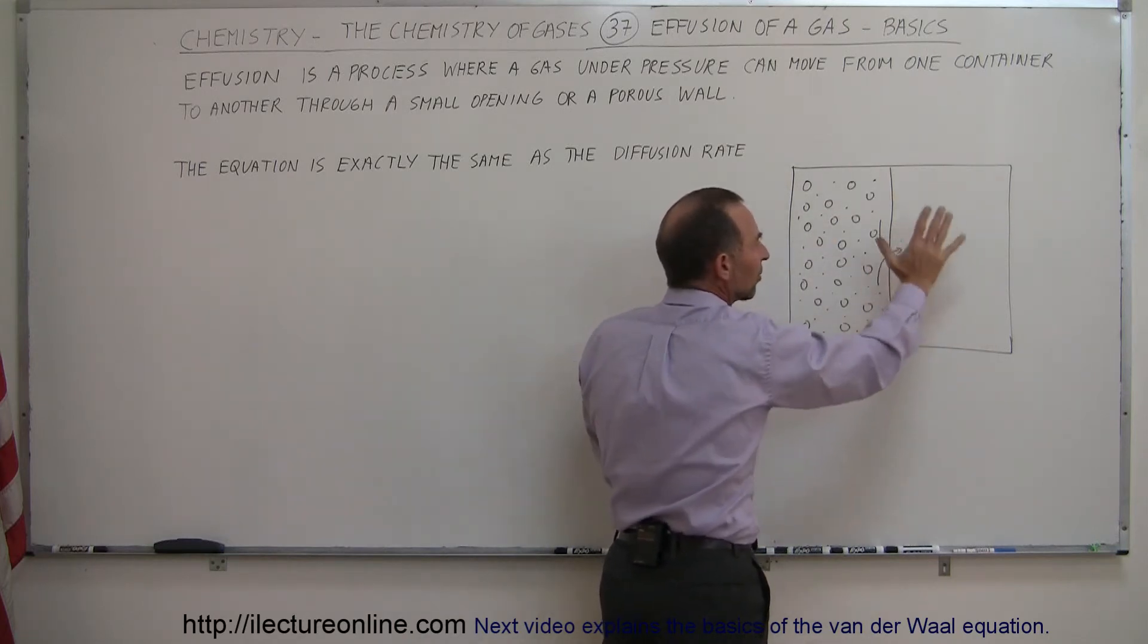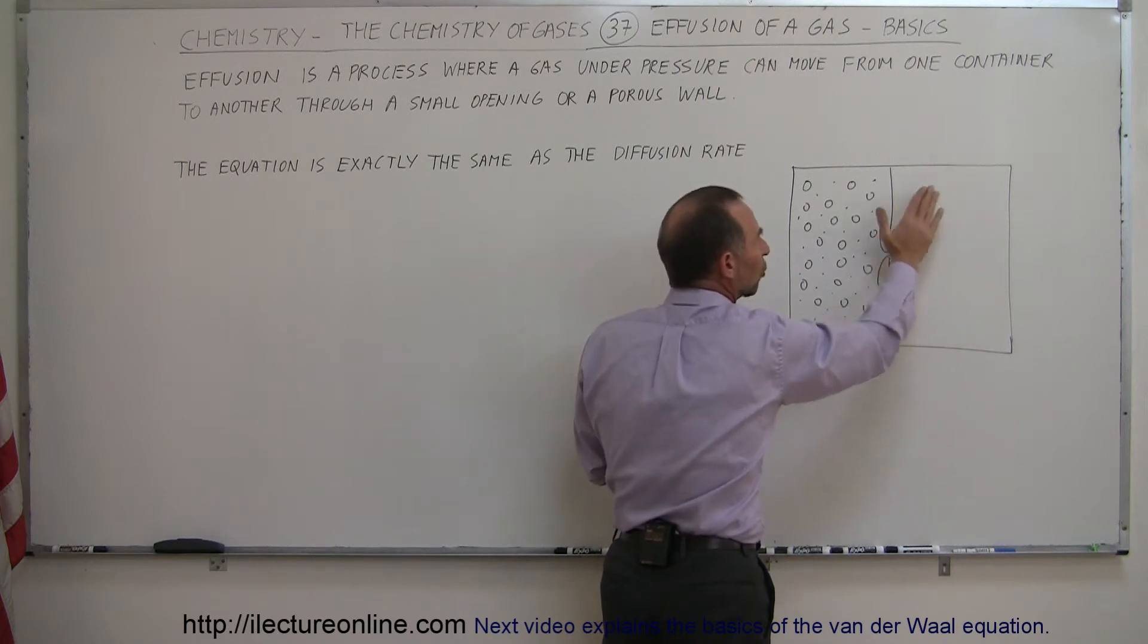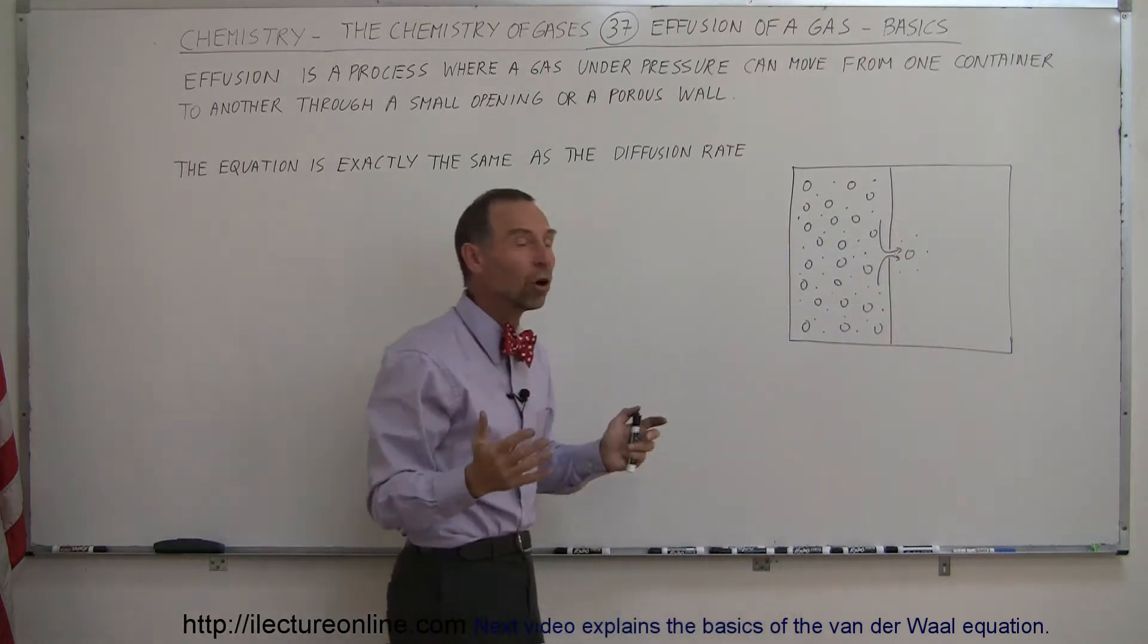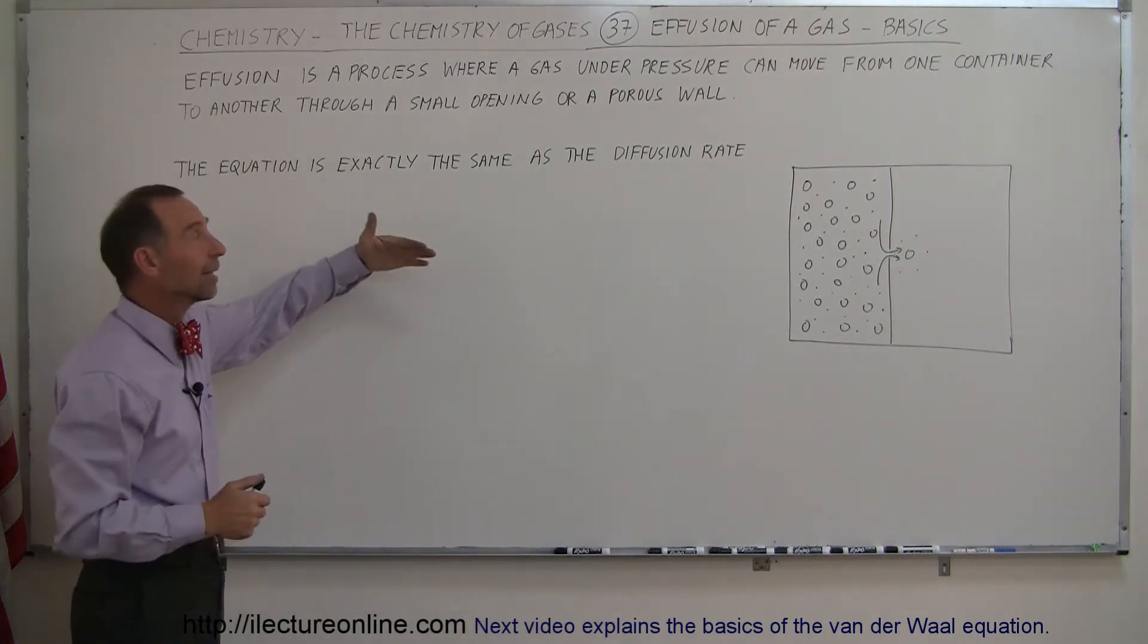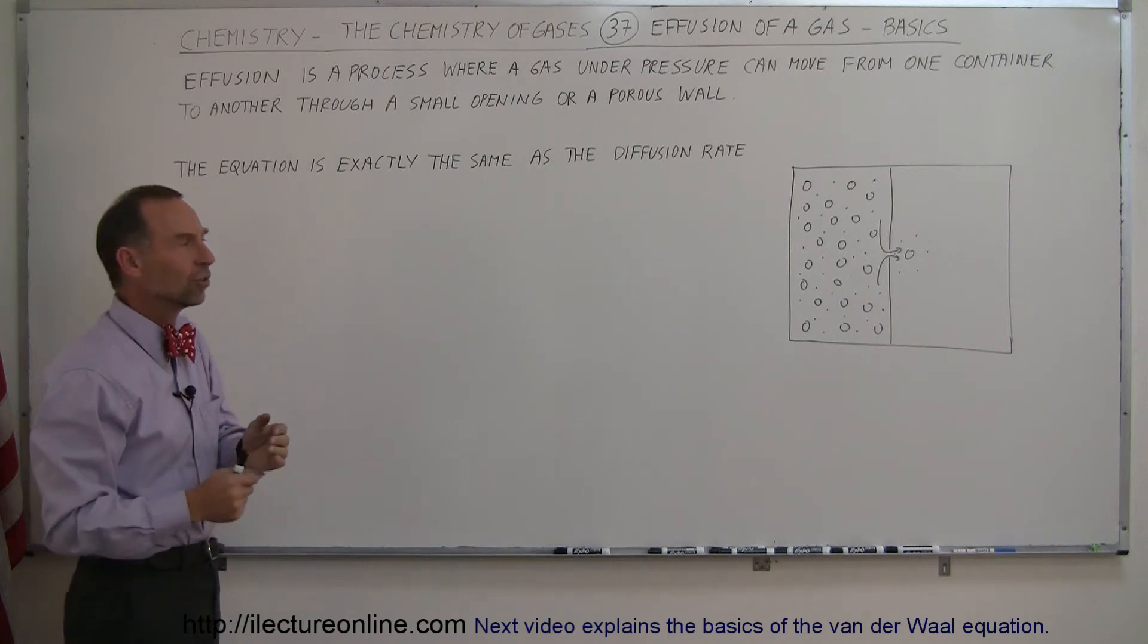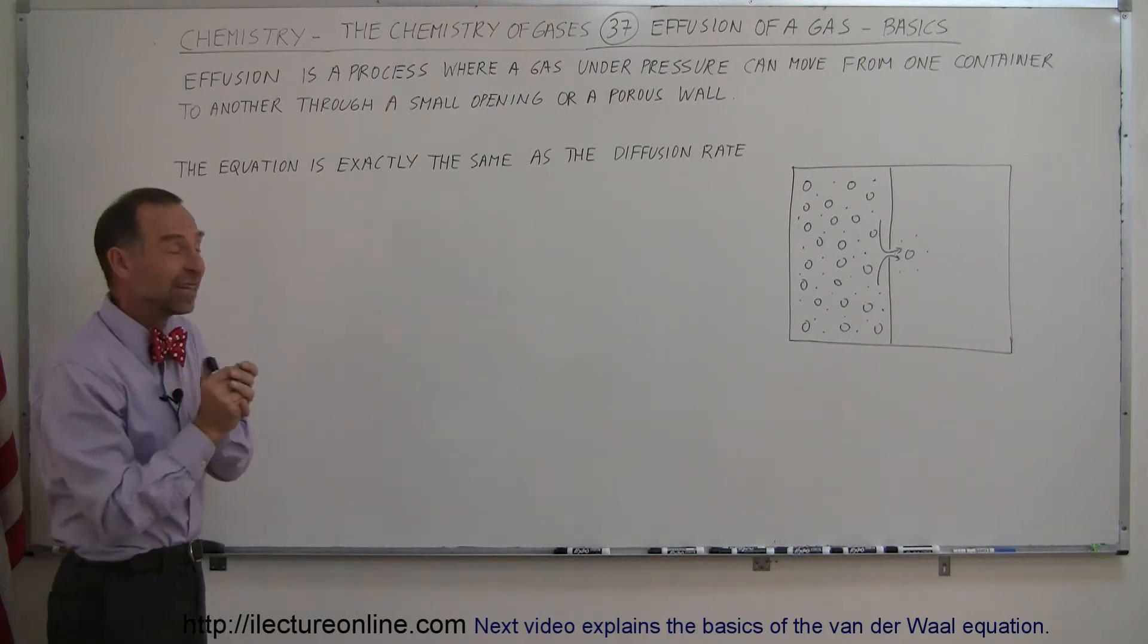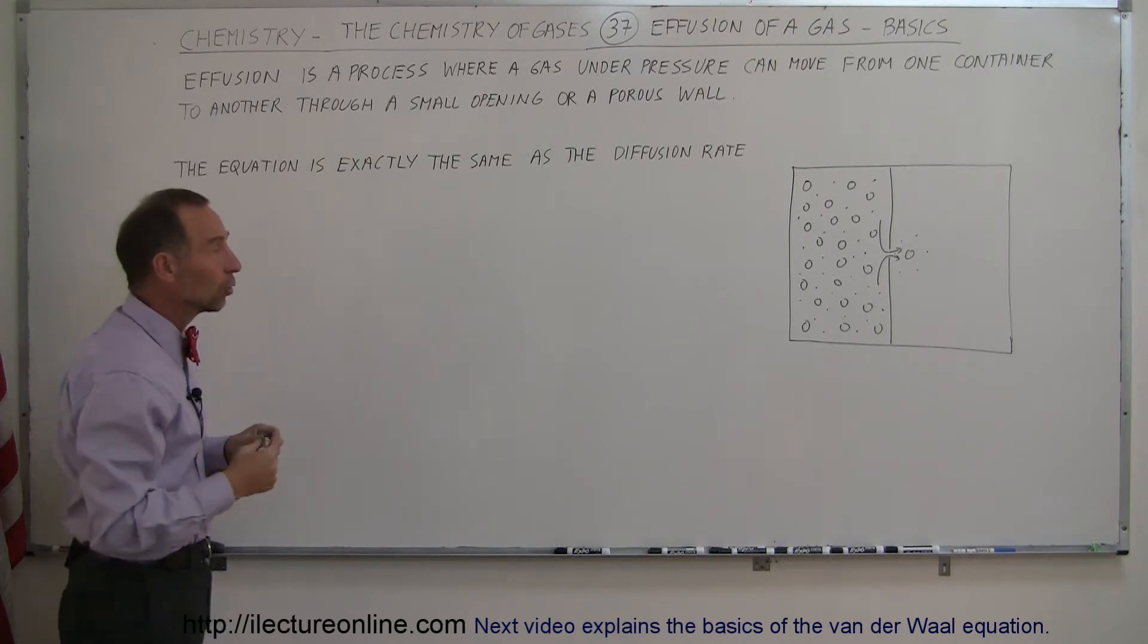And so after a while you stop the process and what you have in here is a much greater percentage of the small molecules compared to the large molecules, and that's called effusion. It turns out the equation we use for that is exactly the same as the diffusion equation. It's all about the velocity and therefore the size of the molecules.